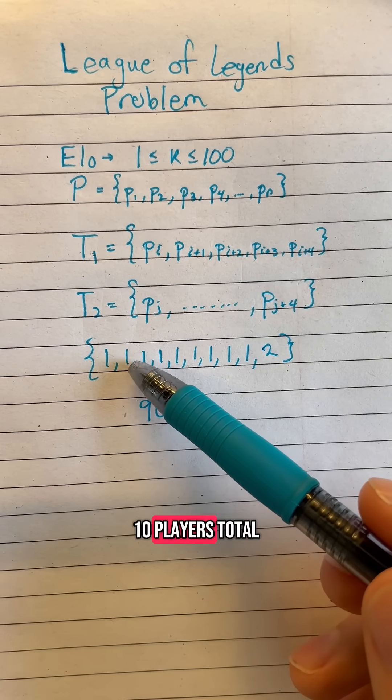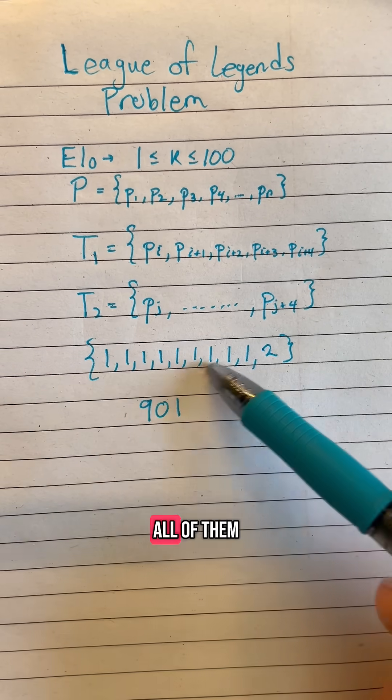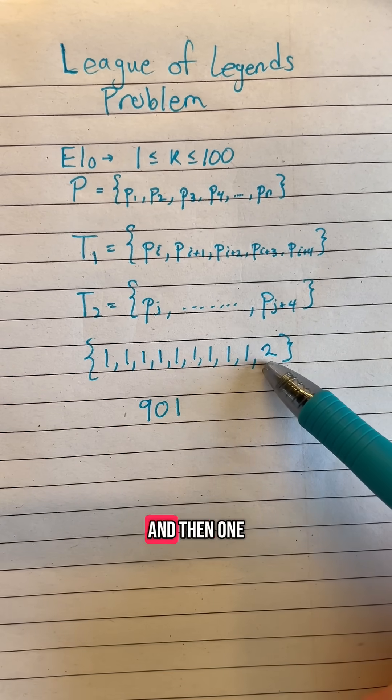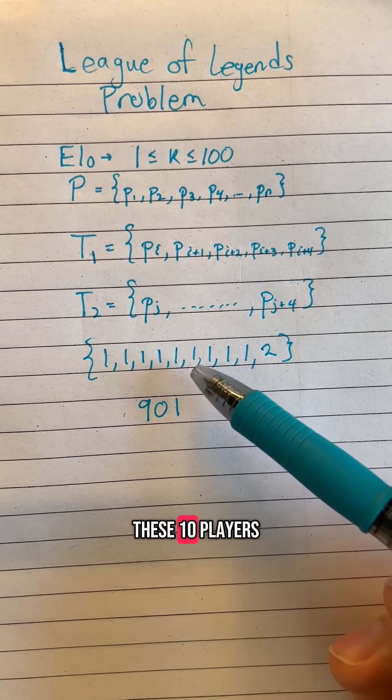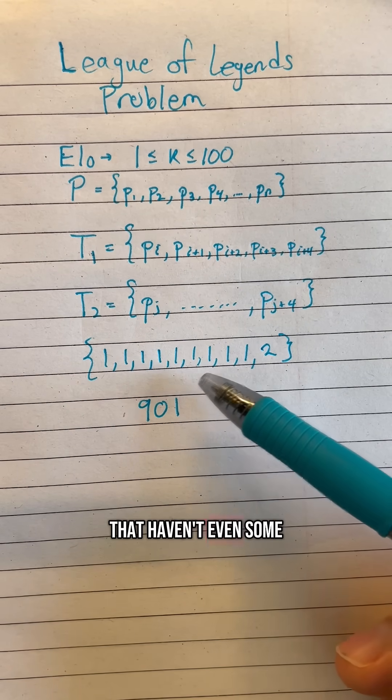Clearly just having 10 players total is not enough because what if all of them have the ELO score of one and then one of them has the ELO score of two. There's no way to divide these 10 players into two teams that have an even sum.